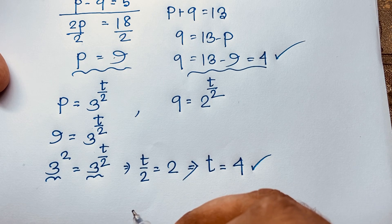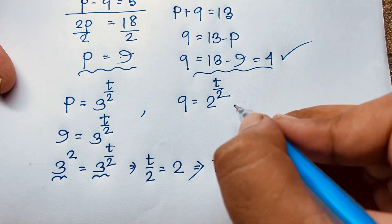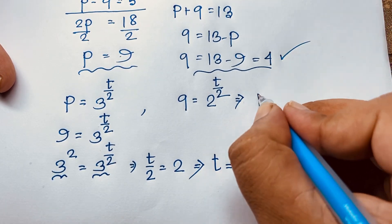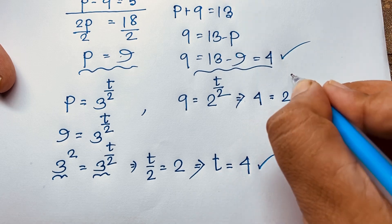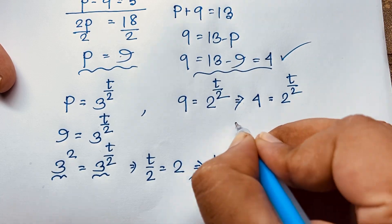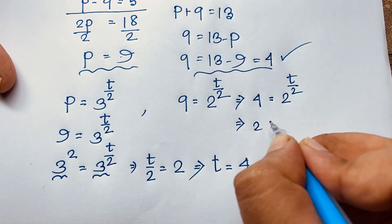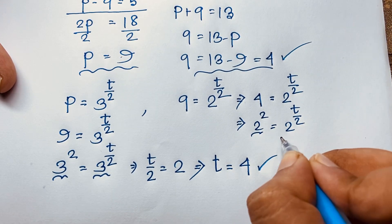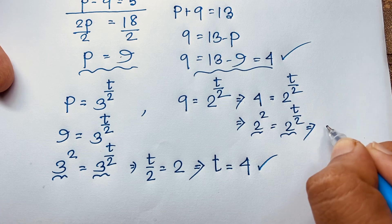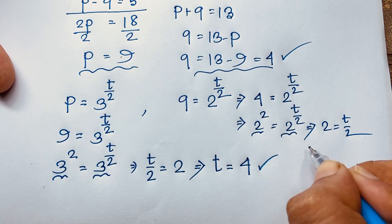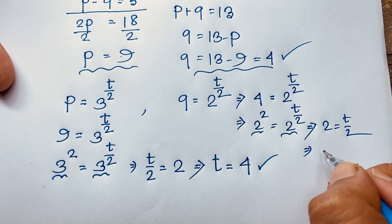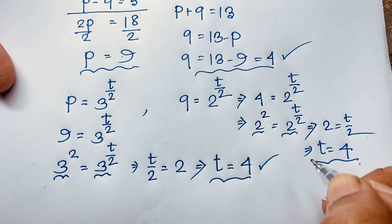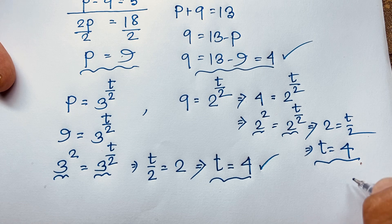We can also verify using q: q equals 4 and 2 to the power t over 2 equals 4, which is 2 to the power 2. Since the base is the same, the exponent gives 2 equals t over 2, so multiplying both sides by 2 gives t equals 4. This confirms our final answer.